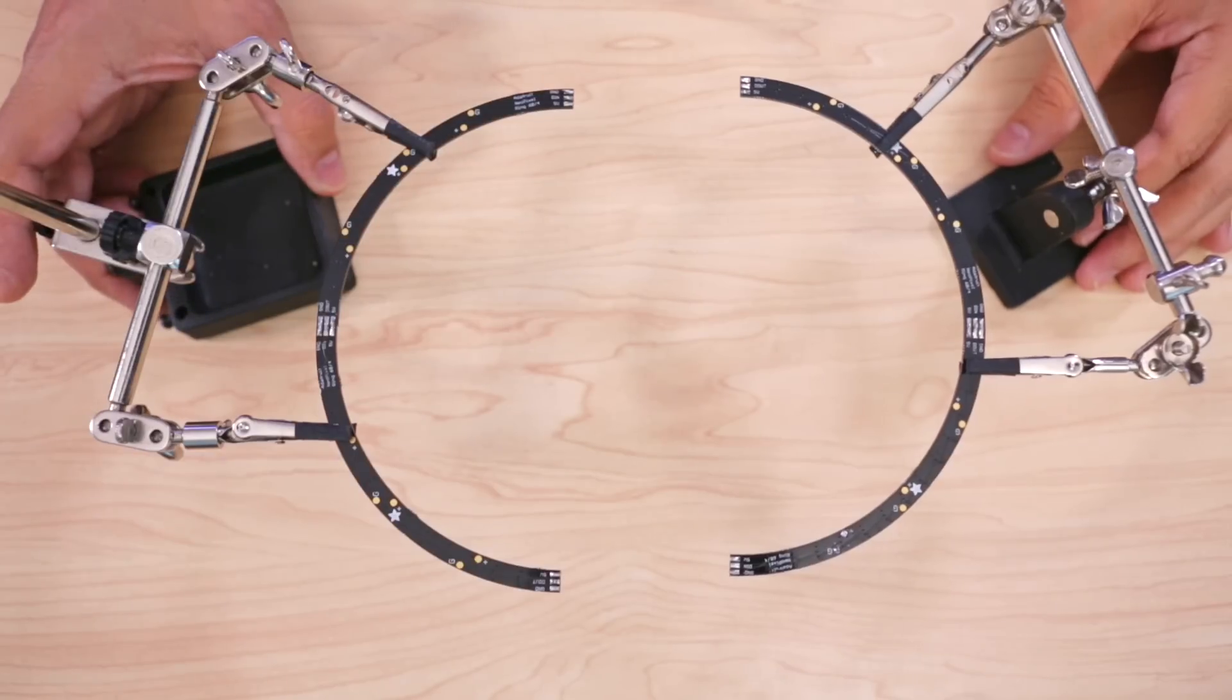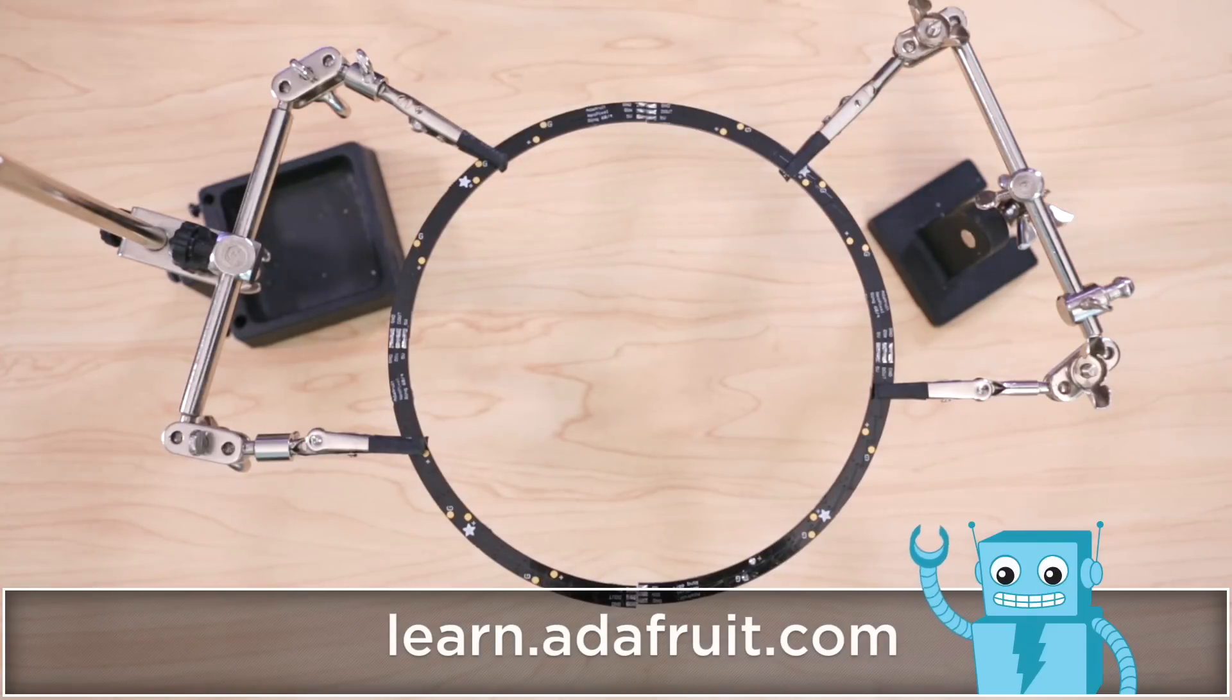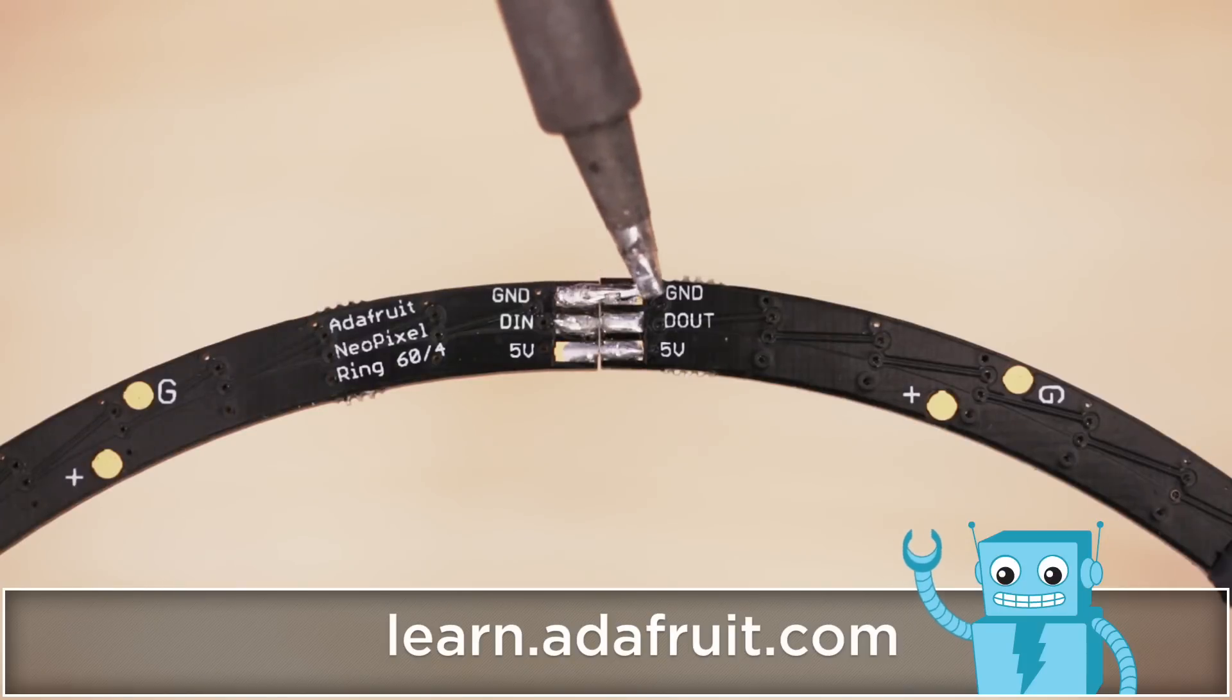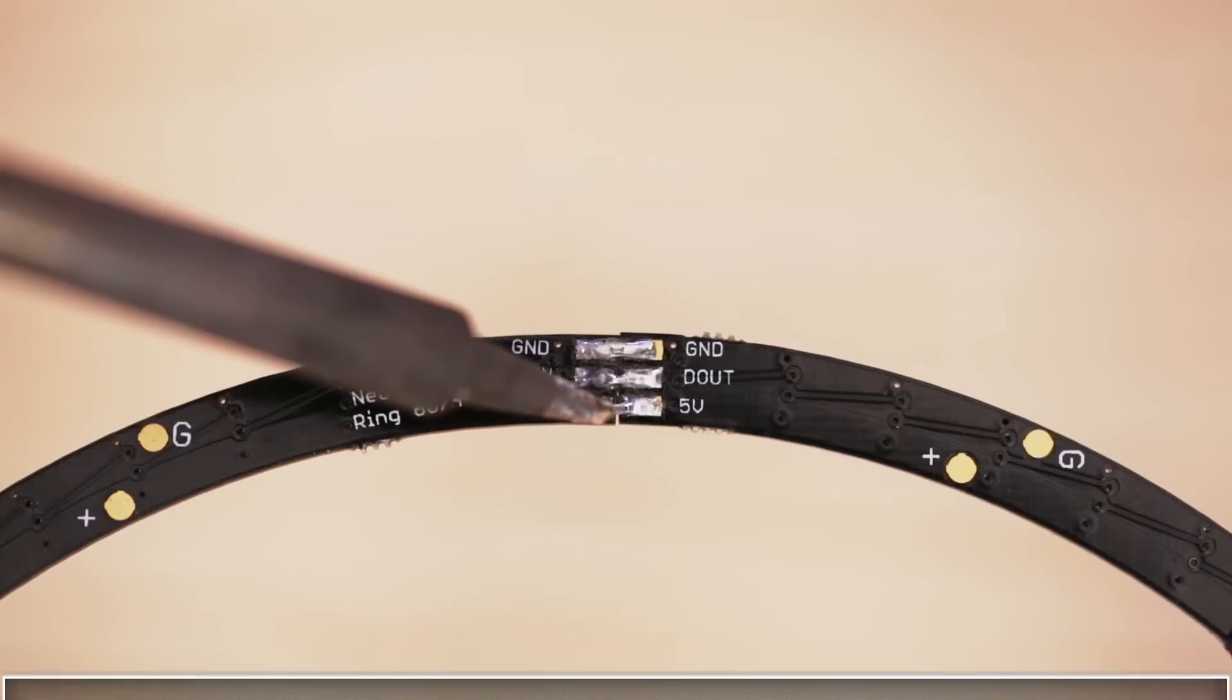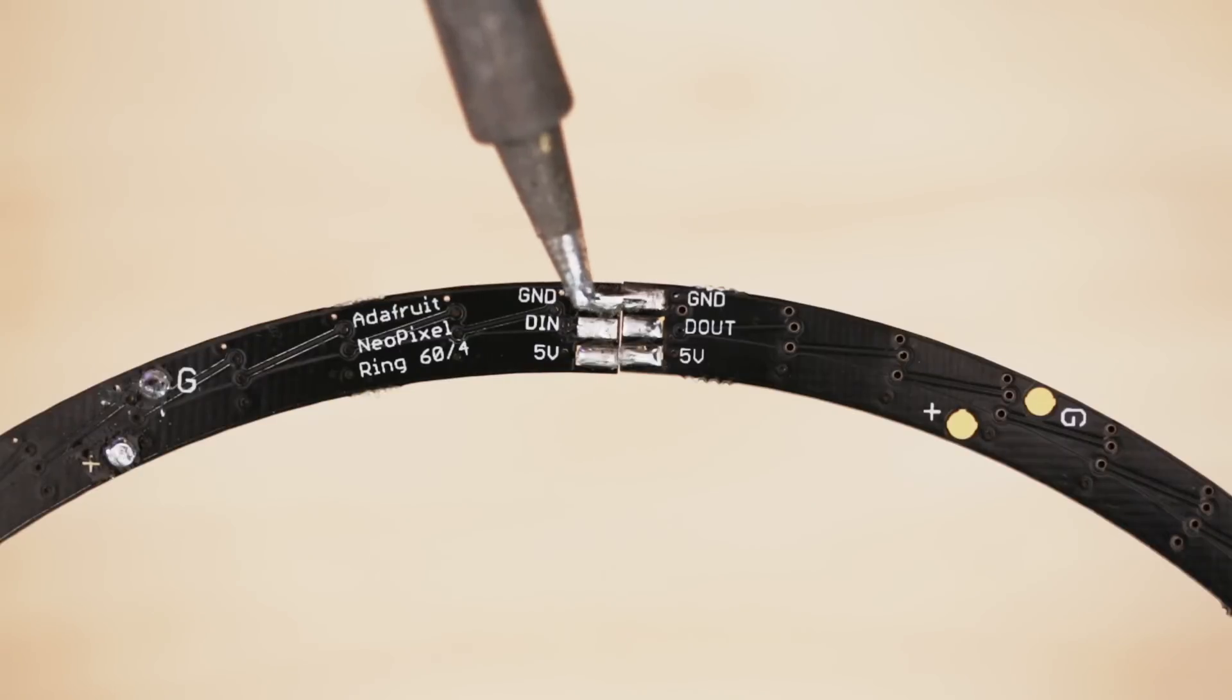To start this build we'll need to solder together four quarter-sized NeoPixel sections to make the 60 NeoPixel ring. You can follow along with our step-by-step tutorial linked in the description. We'll need to apply a decent amount of solder to join the three pads together.